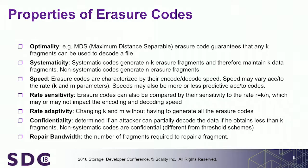Codes are characterized by their encoding speed, decoding speed, and also by the rate. The rate is defined by K out of N. According to the application, you will have a different rate — how many data fragments you have compared to coding fragments. Some codes are very good for some rates and very bad for others.